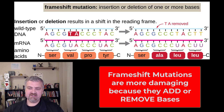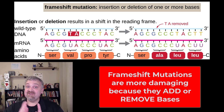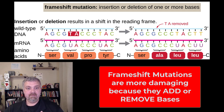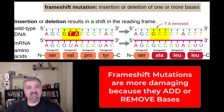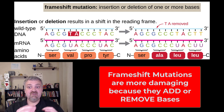Next we have frameshift mutations, where you insert or delete base pairs. This is called a frameshift mutation because your RNA is read three letters at a time. If you add or remove a base pair, you don't just affect where that occurred — you shift the entire reading frame. So instead of reading GTA it now reads GCC, and the next codon that was supposed to be CCC now reads CTA. Everything downstream is scrambled.